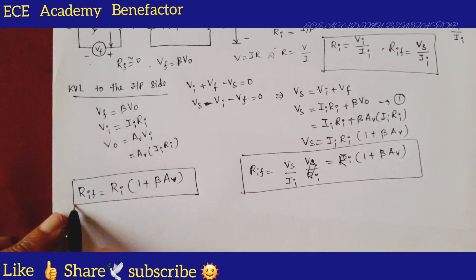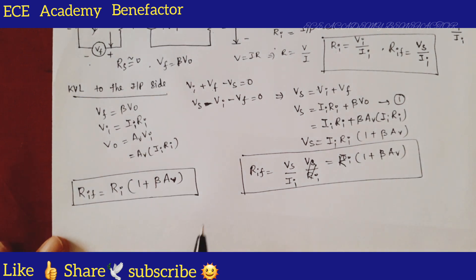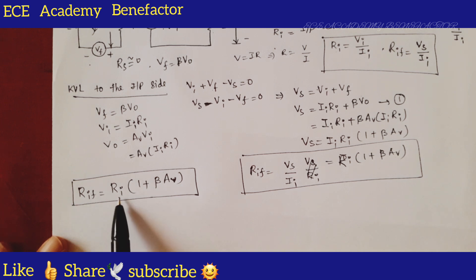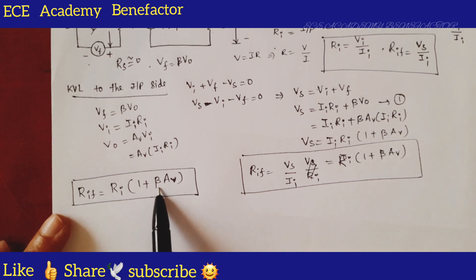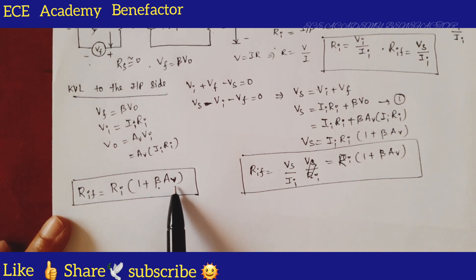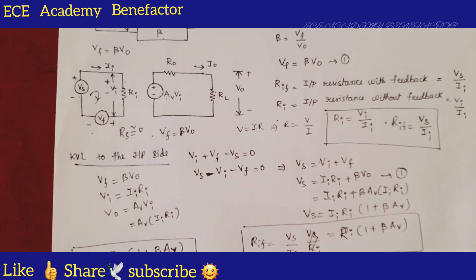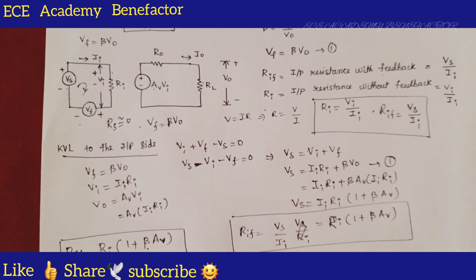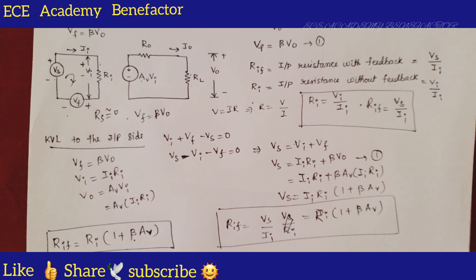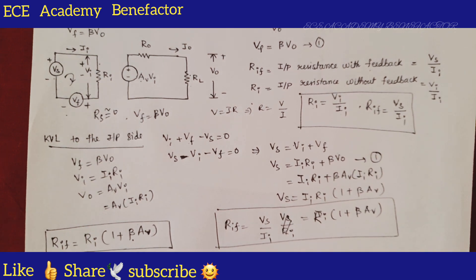This is the input resistance of the voltage series feedback amplifier. Rif is the input resistance with feedback, Ri is the input resistance without feedback, beta is the feedback ratio, and AV is the voltage gain. I hope you have understood the derivation. If you have any queries, you can post them in the comment section. Thank you and good luck, students.